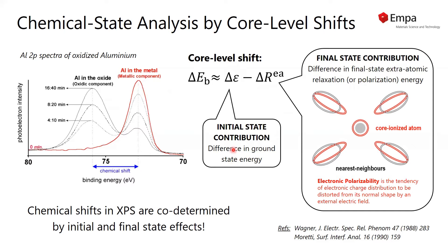The initial state contribution arises from the difference in ground state energy between aluminum in the metal and aluminum in the oxide, whereas the final state contribution arises mainly from the relaxation of valence shell electrons trying to screen the core hole in the photoemission process. This is related to the electronic polarizability of the media.